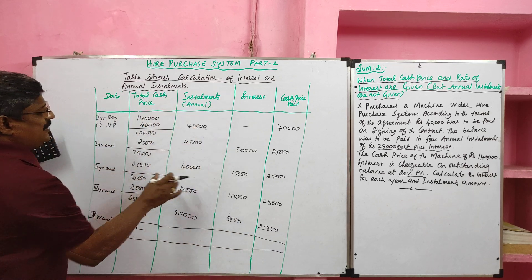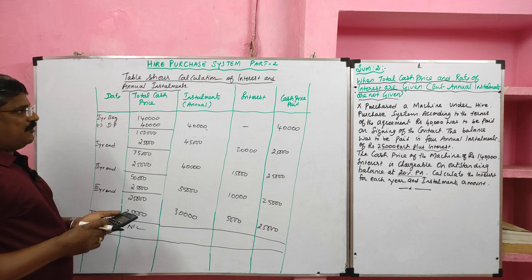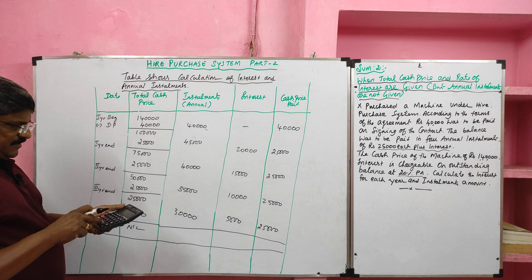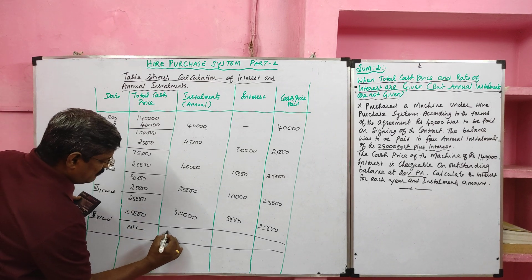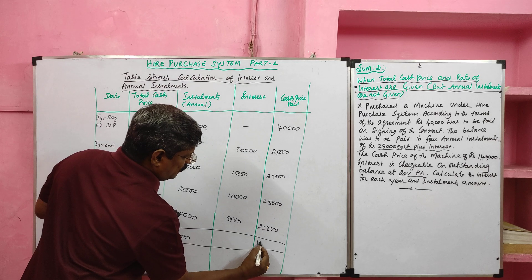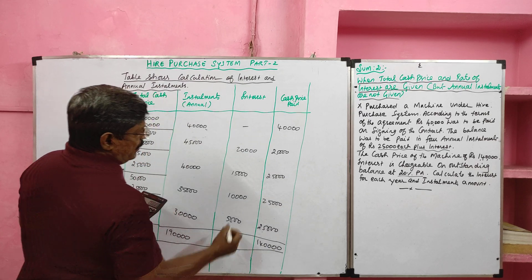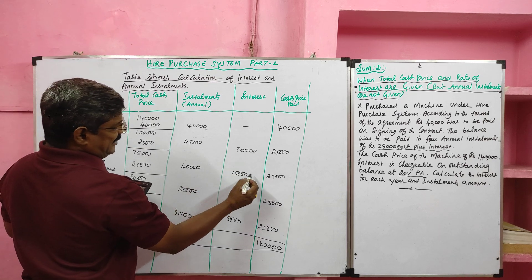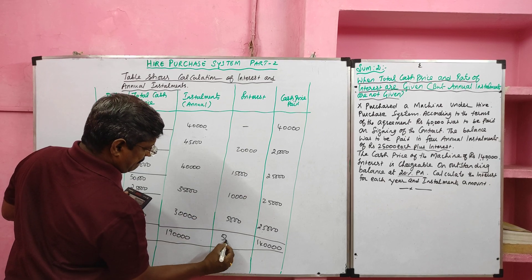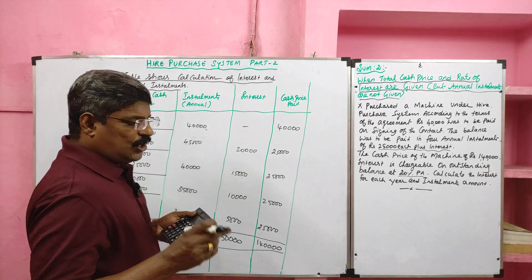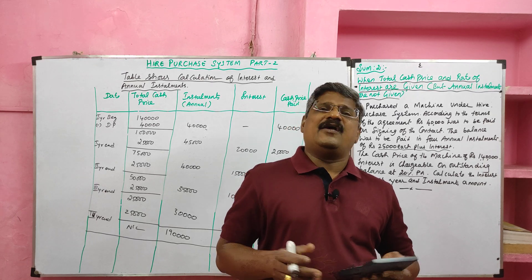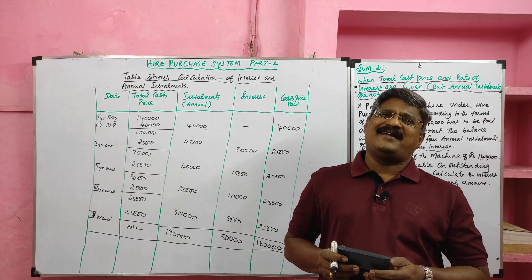If we add all annual installments we get the total installment price: ₹40,000 plus ₹45,000 plus ₹40,000 plus ₹35,000 plus ₹30,000 equals ₹1,90,000. The total cash price is ₹1,40,000. The annual interest breakdown is: first year ₹20,000, second year ₹15,000, third year ₹10,000, fourth year ₹5,000, totaling ₹50,000. In this second case, annual installments are not given but annual rate of interest and total cash price are given. We solved this problem — in the next class we'll solve a different problem. Till then, bye and thank you.